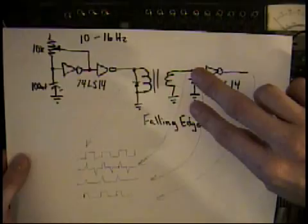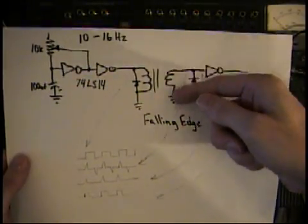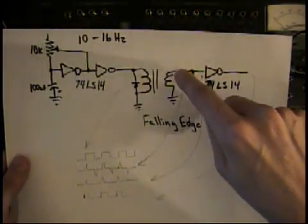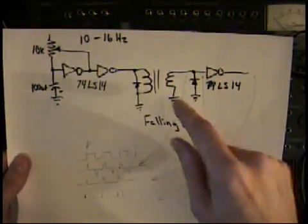You can make a falling edge detector by reversing these connections on the secondary, so the ground goes to the top and the output goes to the bottom.